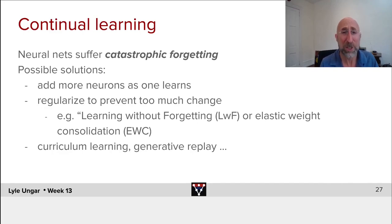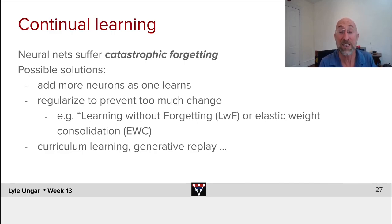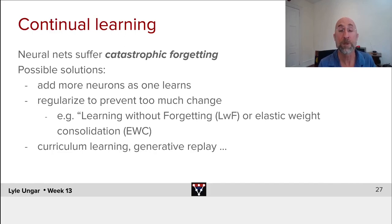Humans are pretty good. When we learn a new fact, when we learn a new language, we don't immediately completely forget the first language we learned. A little bit, we get some degradation, some interference, but mostly we're pretty good at learning a second language without forgetting the first one. And by the time we learn the third or fourth language, we're getting better at it. How might we implement this sort of learning in an artificial neural net, a deep learning system?